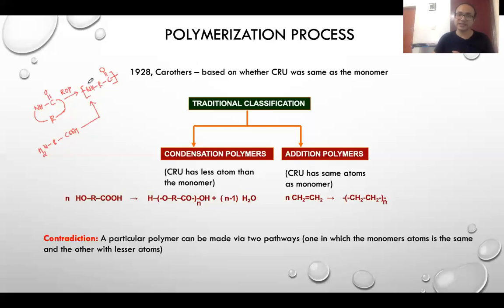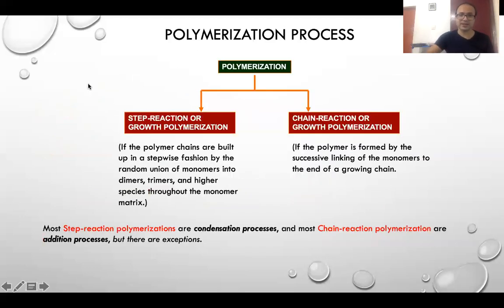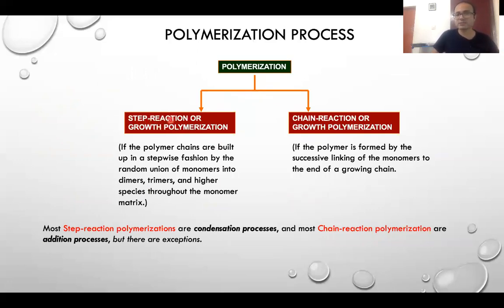Because of this ambiguity, a more advanced classification introduced newer terms to classify polymers on the basis of the polymerization process. These are: step-reaction polymerization, also called step-growth polymerization, and chain-reaction or chain-growth polymerization.